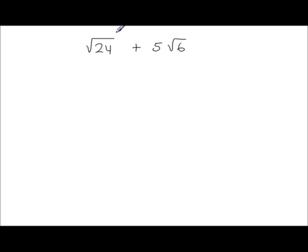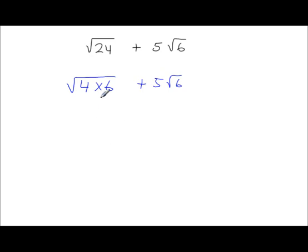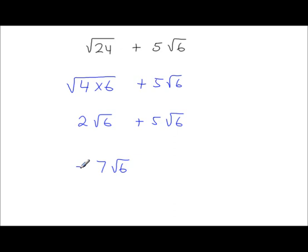In this example, we simplify root 24 plus 5 root 6. Root 24 can be written as root 4 times root 6, which equals 2 root 6. So we have 2 root 6 plus 5 root 6, which gives 7 root 6. That is the simplified answer.